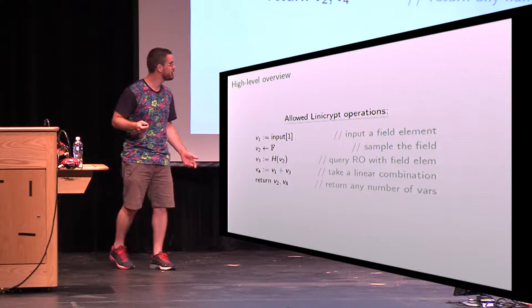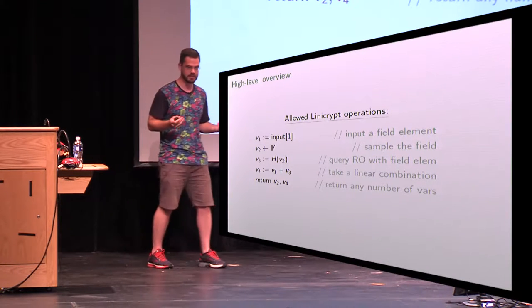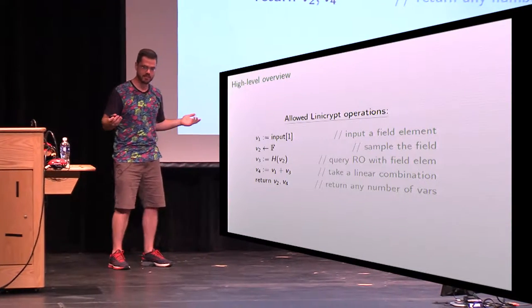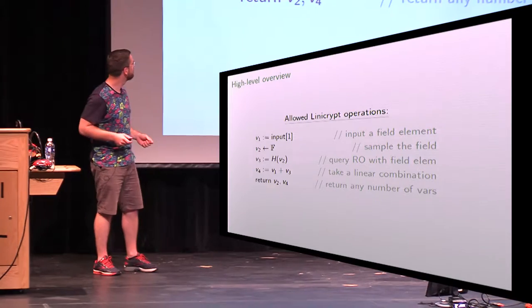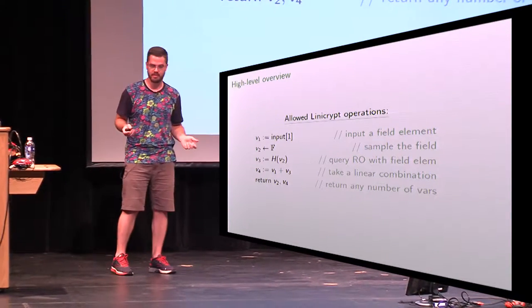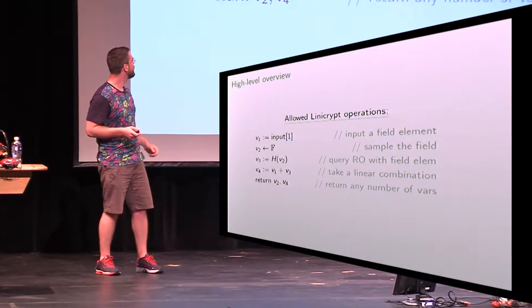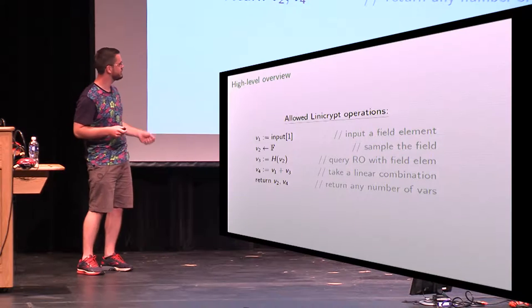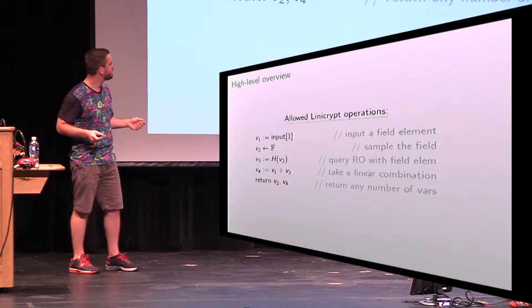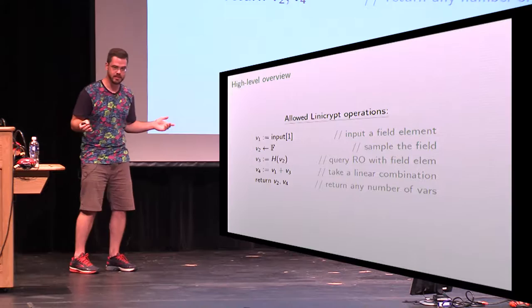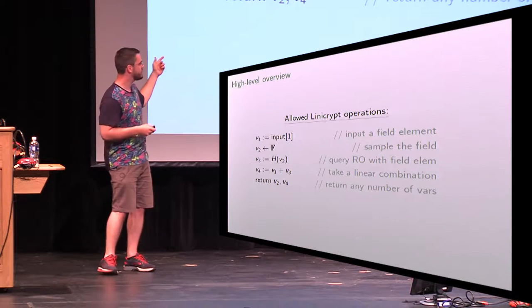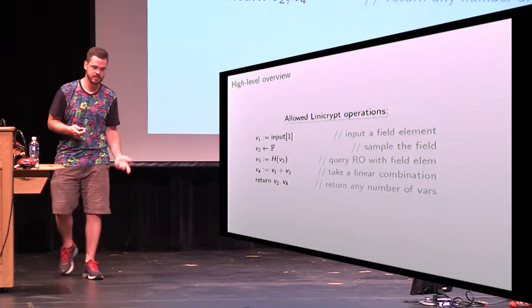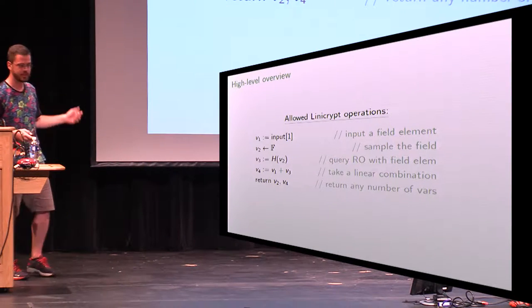And then they can combine variables they know with a fixed linear coefficient. For a concrete example — and so you can get used to my notation — the first variable just takes some finite field element as input. The second variable samples the finite field to get a new variable. The third queries the random oracle at that point using H notation. The fourth variable takes a linear combination; the fixed coefficient here is one, but it could be any fixed coefficient. We can return any number of variables.